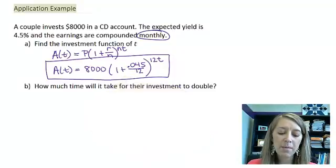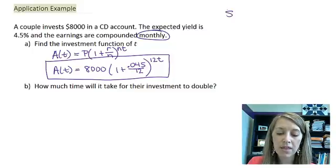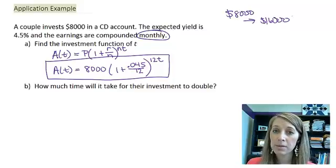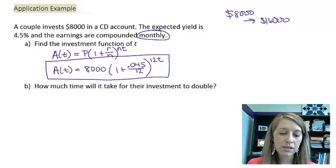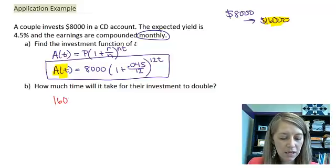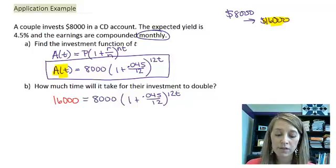Now, the second part of this is asking how much time will it take for their investment to double? So if they're starting out with $8,000, and their goal is for it to double, meaning we're going to end up with $16,000, how much time is it going to take? Instead of our amount here, we're just going to replace that with $16,000. So we have 16,000 equals 8,000 times (1 + 0.045/12)^12t. And so we want to solve this equation.